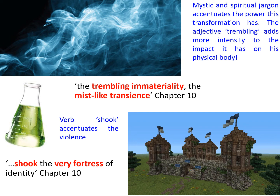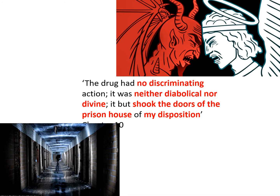This is also echoed in the way that Hyde is described as so ugly without ever being given an explicit description — what we don't fully know, what we're shown but not directly told, does more to stir our imagination than blunt scientific fact could. Chapter ten's most chilling piece of evidence is Jekyll's description of the potion itself: 'The drug had no discriminating action. It was neither diabolical nor divine. It but shook the doors of the prison house of my disposition.' The alliteration of the 'd' sound heightens the dominance of the drug — discriminating, diabolical, divine, doors, disposition.